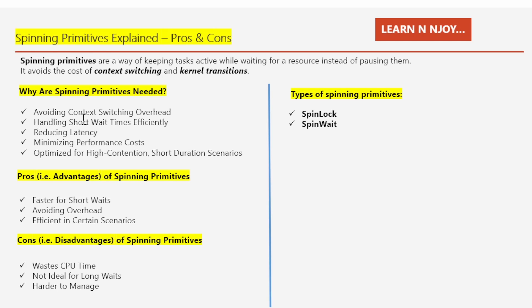The first reason spinning primitives are needed is avoiding context switching overhead. In traditional programming, when a task cannot proceed, it gets paused. Pausing and resuming involves context switching, which takes time and consumes system resources. That overhead is what spinning primitives are designed to avoid.